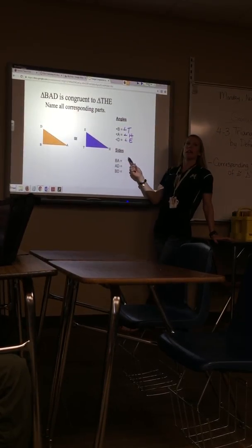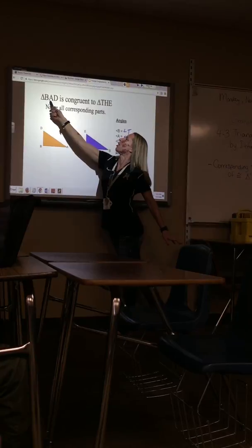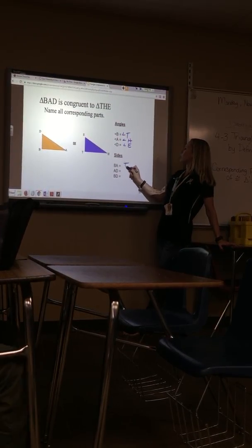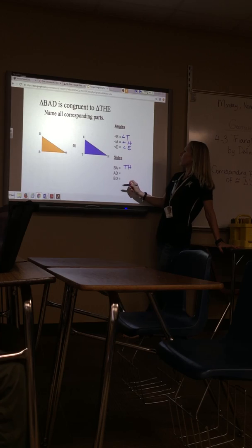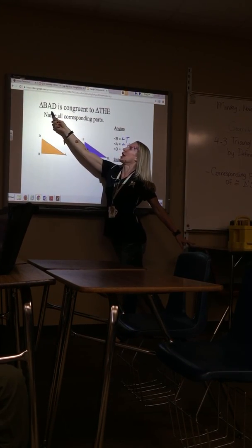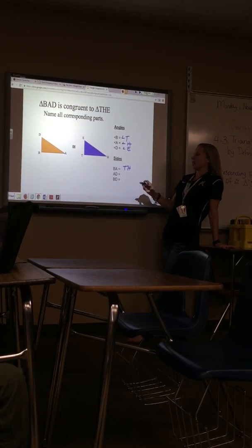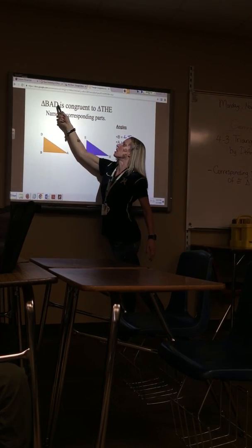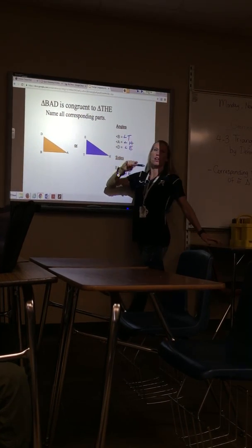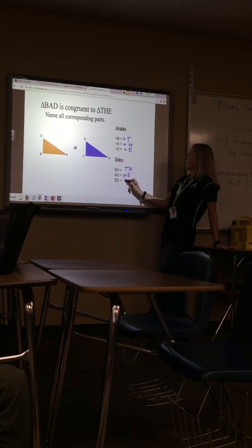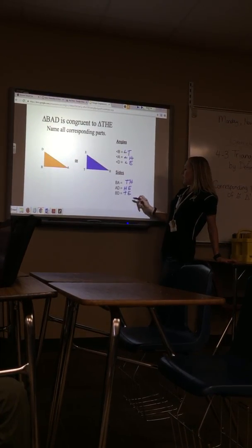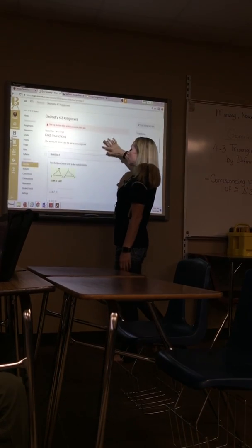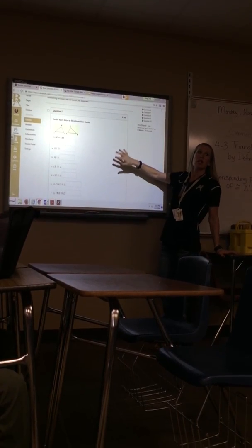BA, the first two letters, would be congruent to TH. AD, last two letters, would be congruent to HE. And BD, first and last letter, would be congruent to TE. So on your assignment, those first few problems are going to be like that. Make sure you go in the correct order or it's going to count it wrong.